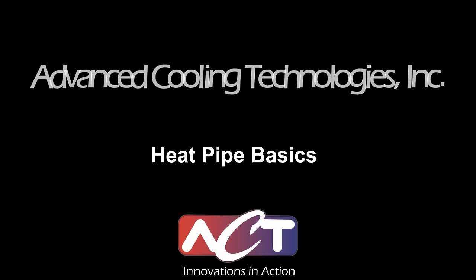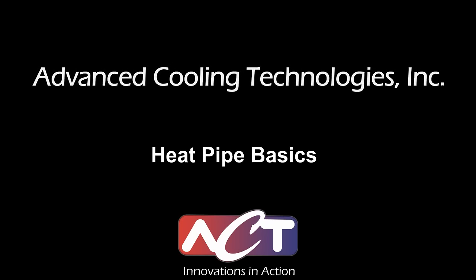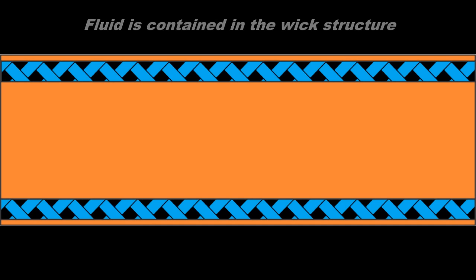Hello, and thank you for joining Advanced Cooling Technologies for this lesson on heat pipe basics. A heat pipe is sealed under vacuum with a small, prescribed amount of working fluid. During non-operation, the fluid is contained inside the wick structure that lines the inner diameter of the heat pipe.